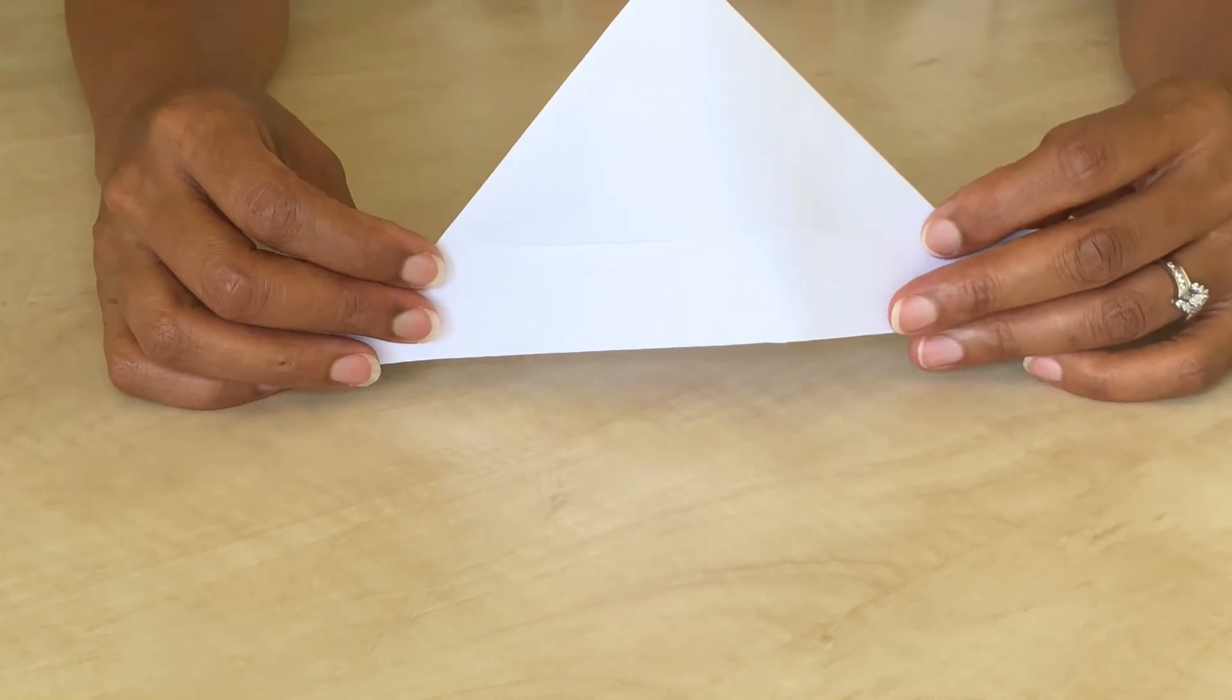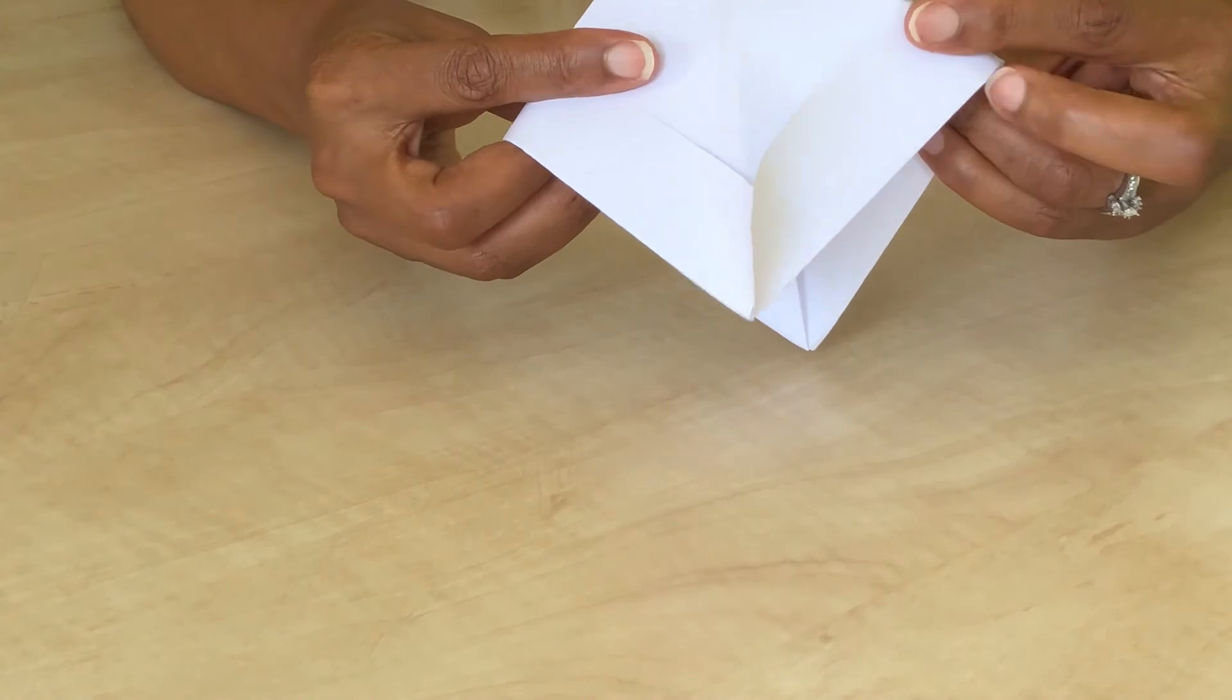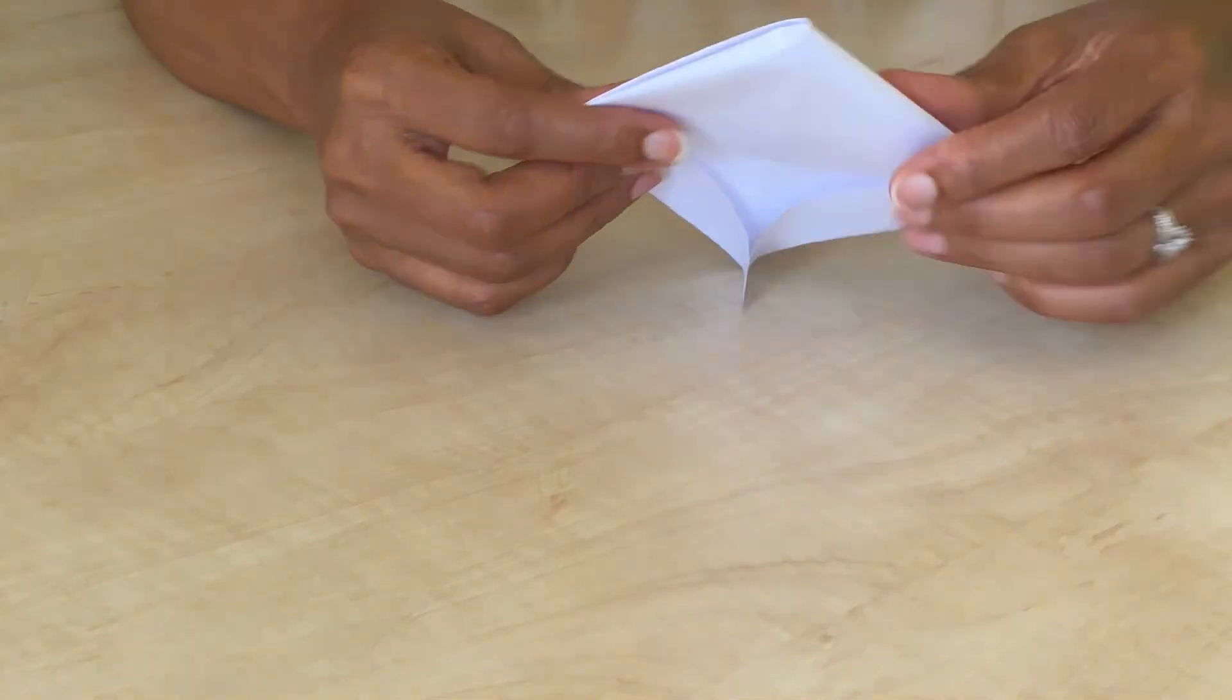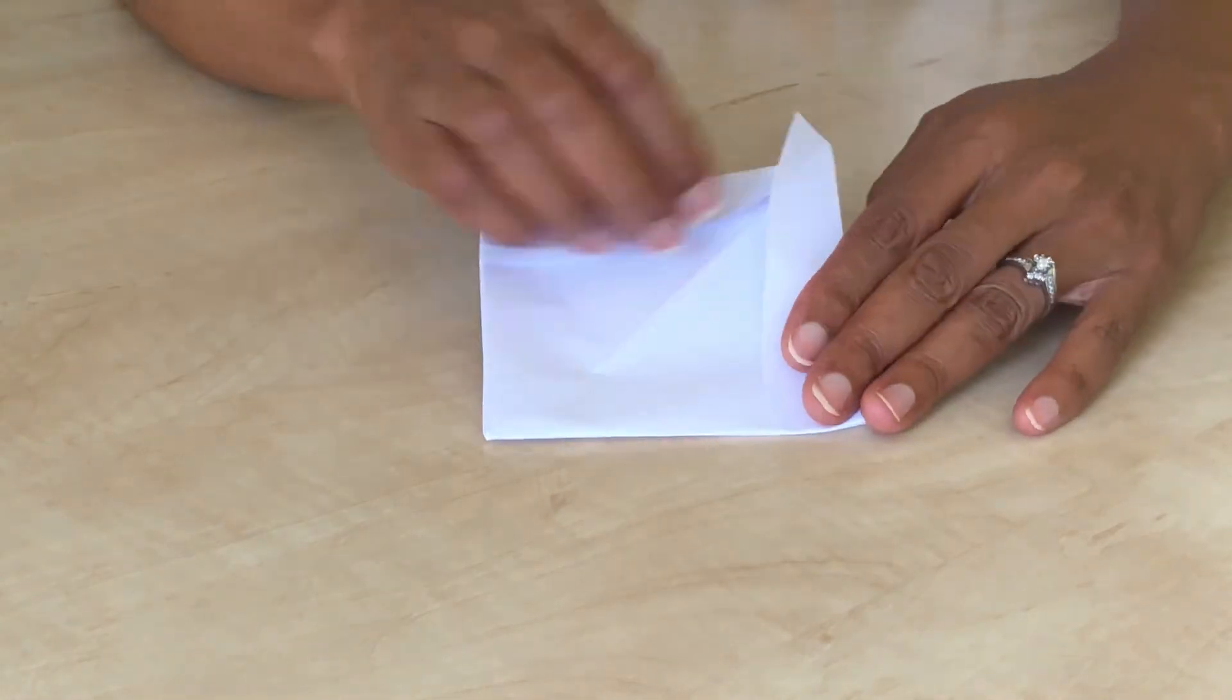Using your fingers, open the hat shape out until it forms a square. Tuck the corners of one flap under the other.